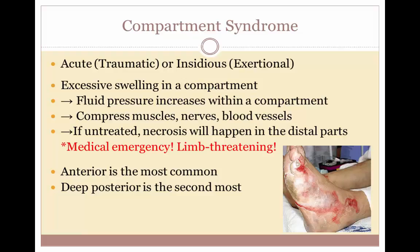Blood flow to the muscle and nerve cells is disrupted. Without a steady supply of oxygen and nutrients, nerve and muscle cells can be damaged. In acute compartment syndrome, unless the pressure is relieved quickly, permanent disability and tissue death may result. This does not usually happen in chronic or exertional compartment syndrome. Compartment syndrome most often occurs in the anterior or front compartment of the lower leg.